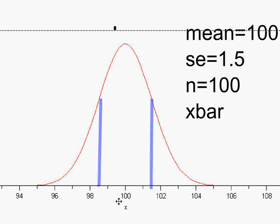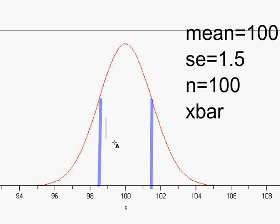The null hypothesis is that the true mean IQ is 100. If the standard deviation is 15 and the sample size is 100, then the standard error is 1.5. This tells us that 68 percent of the time, if the true mean is 100, a sample average should fall between 98.5 and 101.5 — within one standard error.